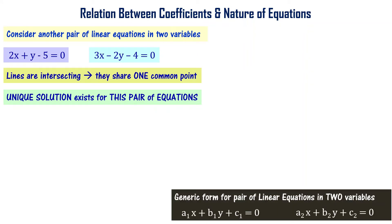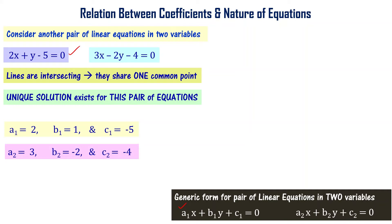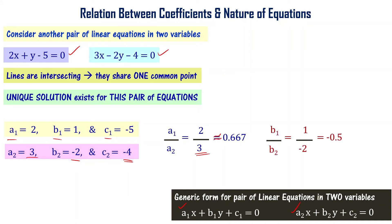Now comparing this equation with the generic form: a1 = 2, b1 = 1, c1 = -5 from the first equation. From the second equation: a2 = 3, b2 = -2, c2 = -4. Computing the ratios: a1/a2 = 2/3 ≈ 0.667 (approximate value), b1/b2 = -0.5, and c1/c2 = 1.25. Here, a1/a2 is not equal to b1/b2.